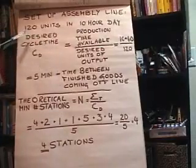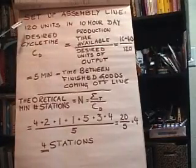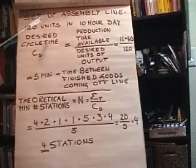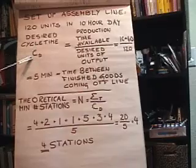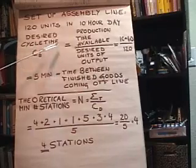So let's say you need to produce 120 units of this good in a 10-hour day. The first thing we can calculate is the desired cycle time C sub D. This is equal to the production time that you have available divided by the desired units of output.